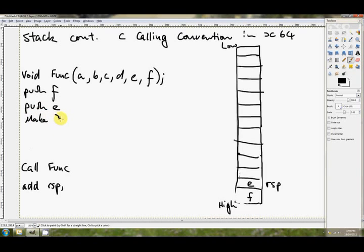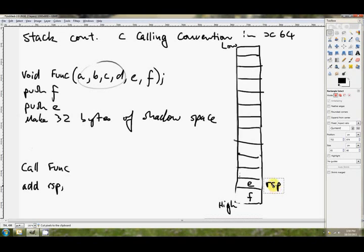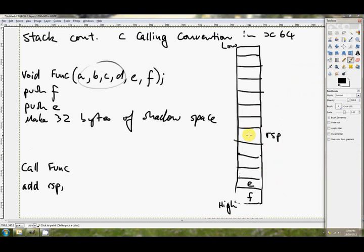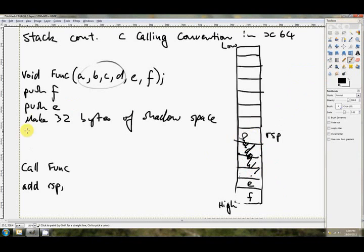So initially our stack pointer is going to be down the bottom here. We're going to make 32 bytes of shadow space for these eventually. But the first thing that we've got to do is push F and push E. So that'll happen like this: push F. You always push your parameters from right to left. And you don't push your first four, because they're passed by registers. So push F and push E. So this will look something like F and E. And then we say make our shadow space.